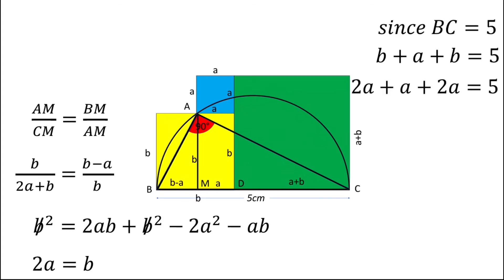So we'll get 2a plus a plus 2a should be equal to 5. From here you can simply obtain a is 1. Now if a is 1 and b is equal to 2a, so b will be 2 cm.